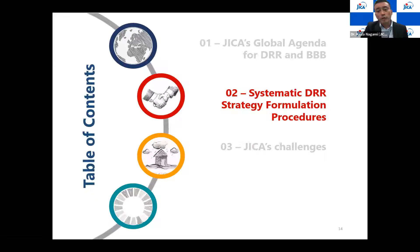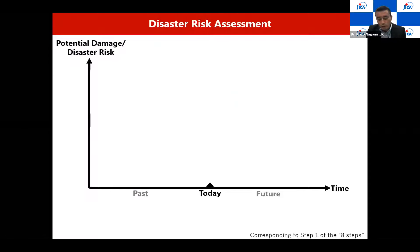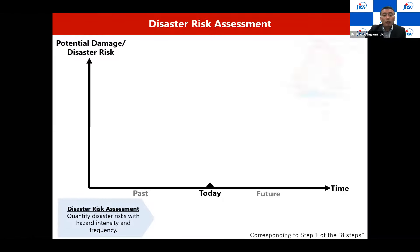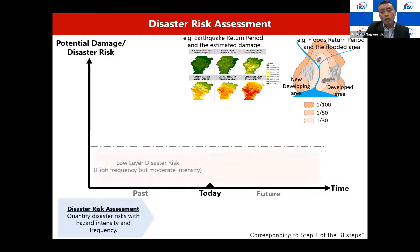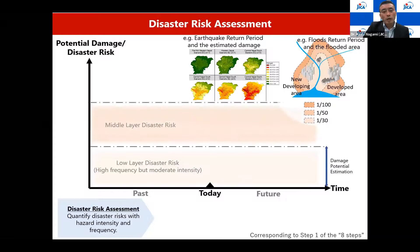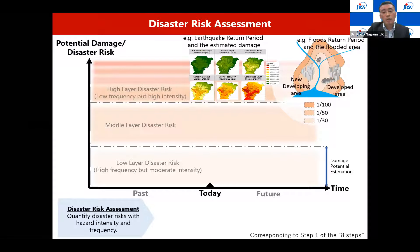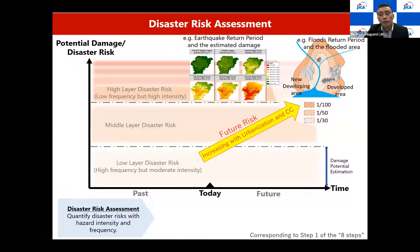The second part is systematic DRR strategy formulation procedures. We must start from how we recognize and understand disaster risk. Based on probability and intensity, we estimate how much disaster risk exists at each level of hazard — low layer, middle layer, and higher layer risk. For earthquake risk, we must do similarly, keeping in mind that risk is always increasing with urbanization and climate change.